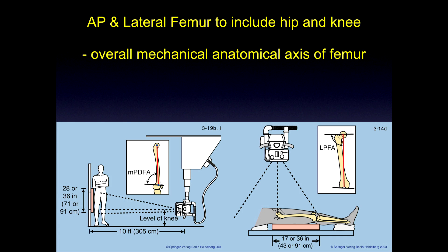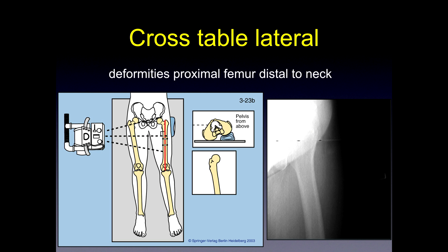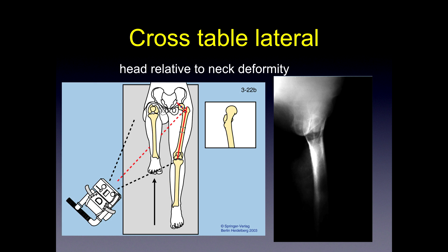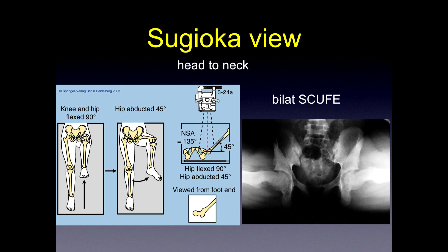X-rays can be focused at the knee including the femur, or at the hip including the femur, to analyze the AP and lateral femoral mechanical and anatomical axes. Cross-table laterals focus perpendicular to the proximal femur, showing neck and proximal femoral abnormalities. If you want to look at the head-neck relationship, direct the beam perpendicular to the axis of the neck. You can also use the Sugiyoka view — another version of that — which clearly demonstrates the deformity between the neck and the head and where the deformity occurs.